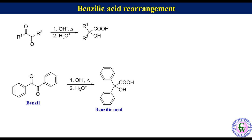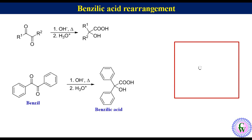To draw the benzylic acid rearrangement product, just draw a carbon and then attach to it a hydroxy group, a carboxylic group, and then R1 and R2.